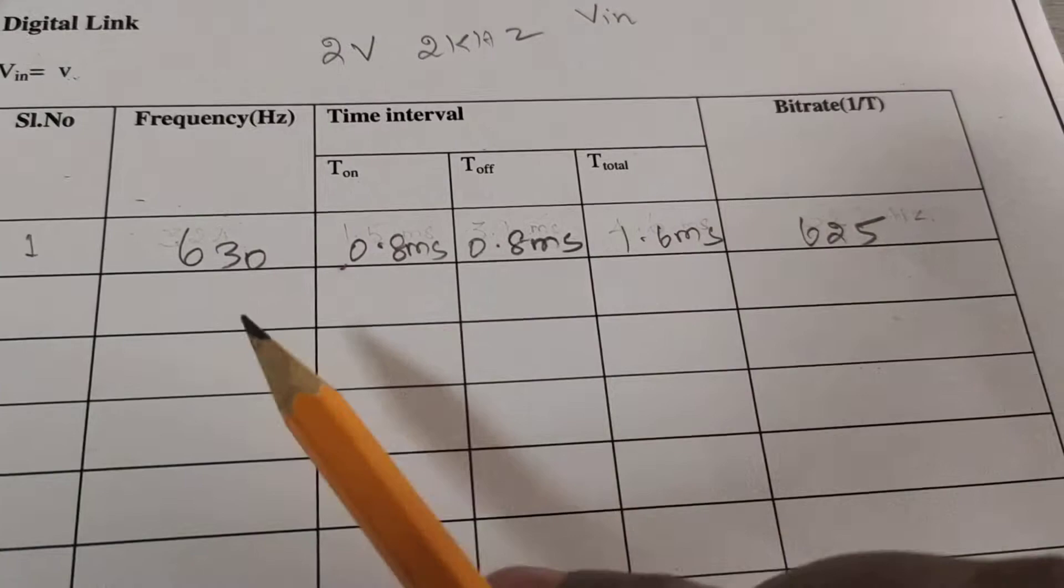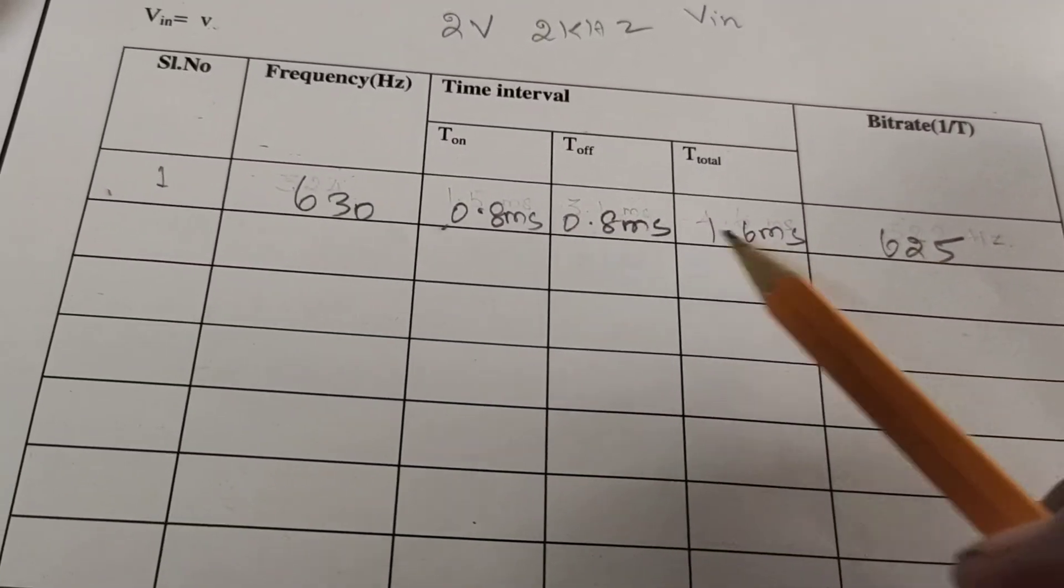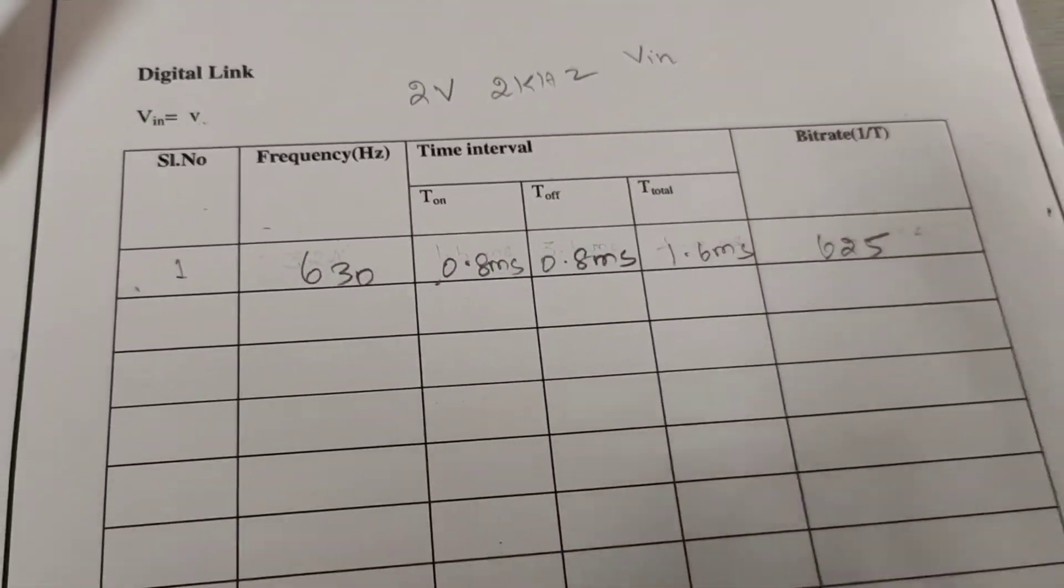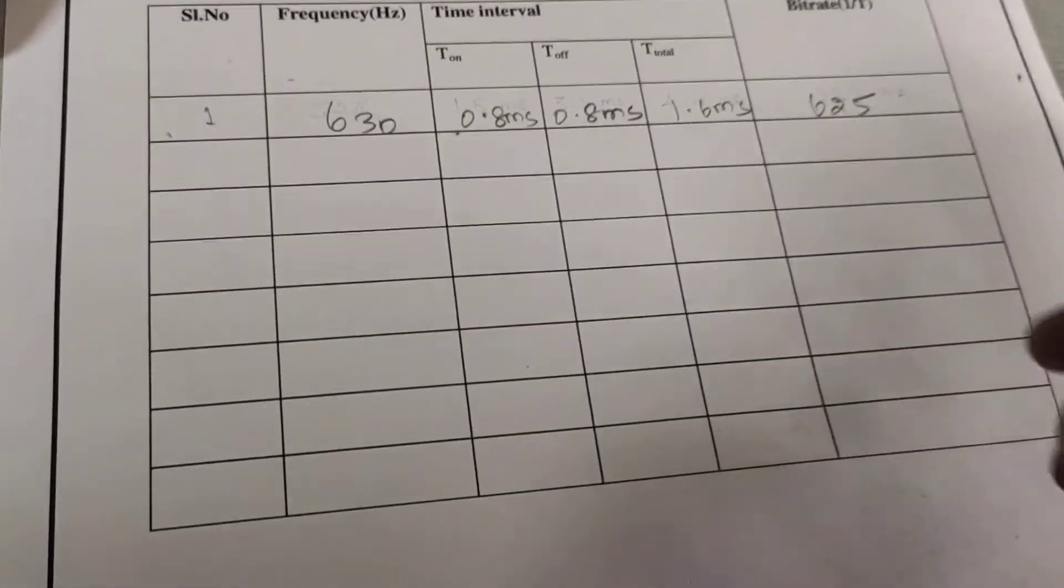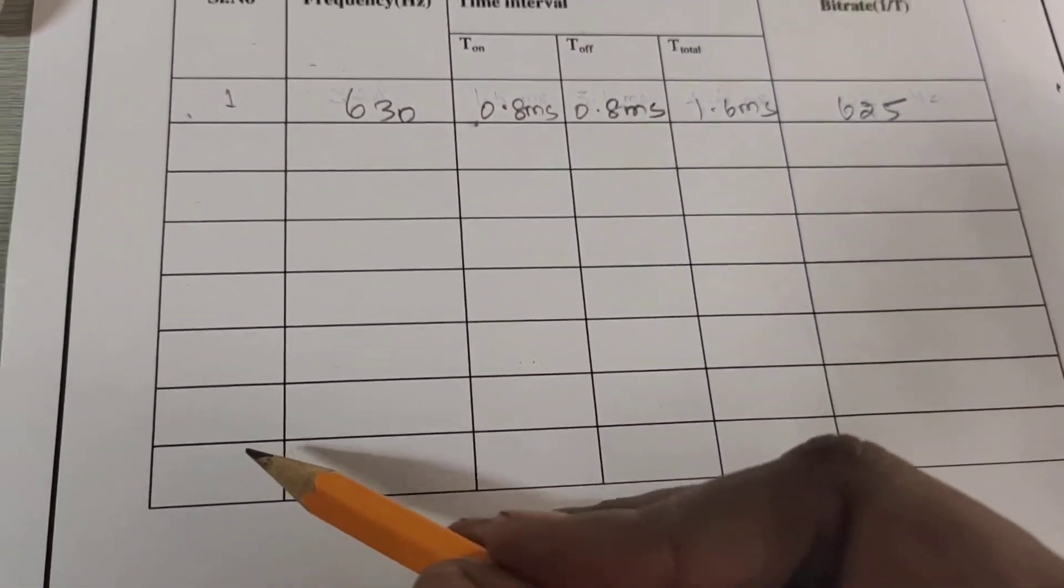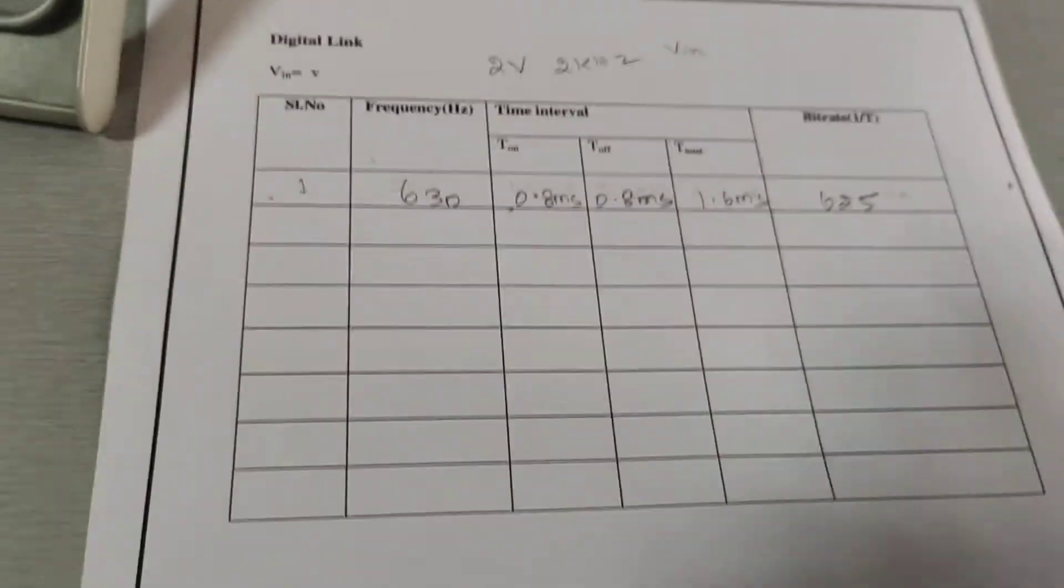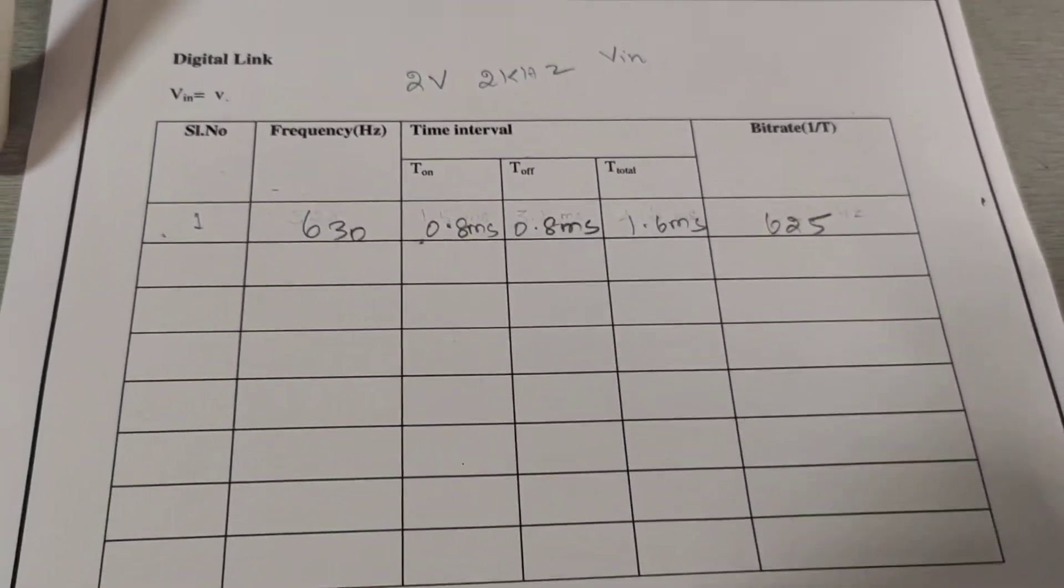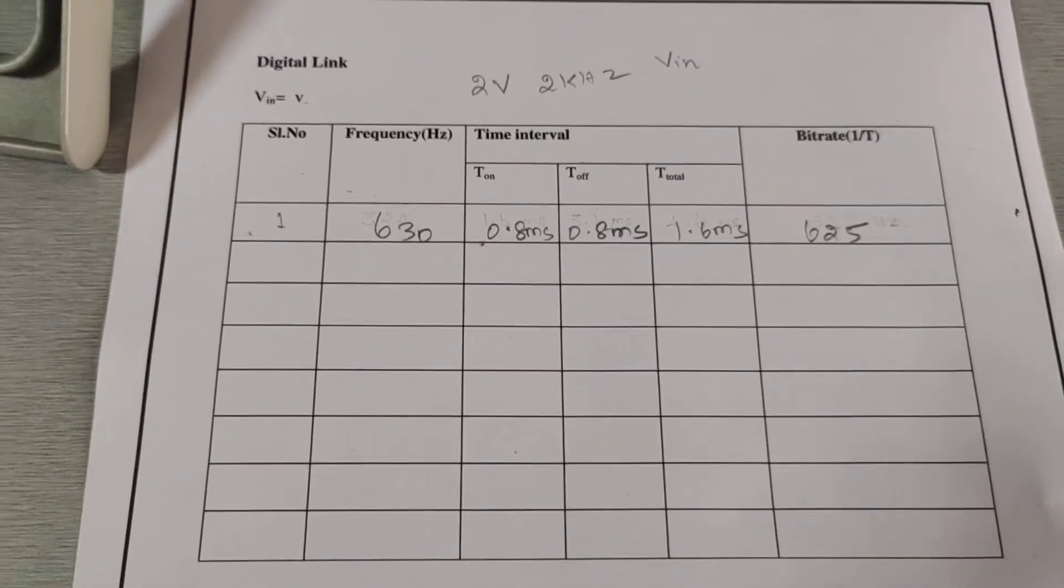So, approximately it is equal to nearer to the value of 630. In this way, we do the experiment and we take 5 or 6 observations. Then, we will calculate the bit rate of the digital communication link. Thank you.